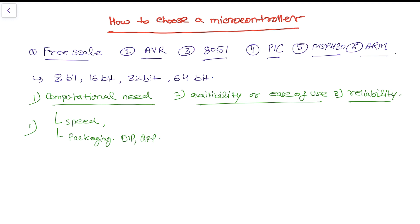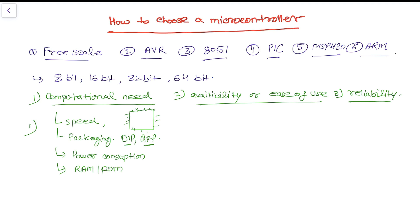Once you select your microcontroller, you need to solder it onto your PCB, so you have to understand what package type it comes in — whether it is QFP or DIP — as this affects how easy it is to solder. You also need to consider power consumption, how much RAM and ROM memory you need, and how many input/output ports or pins you require.